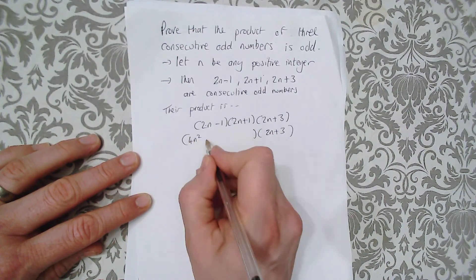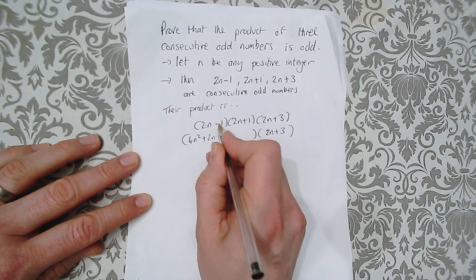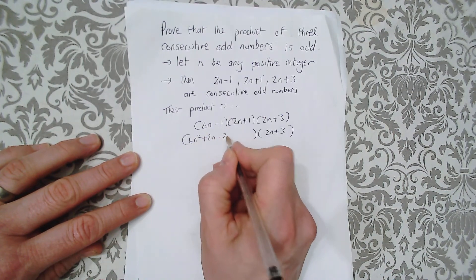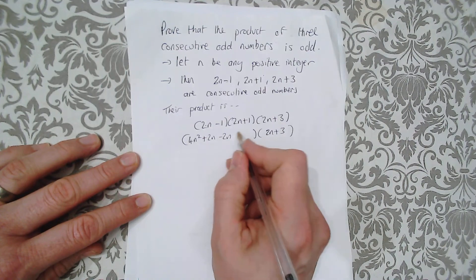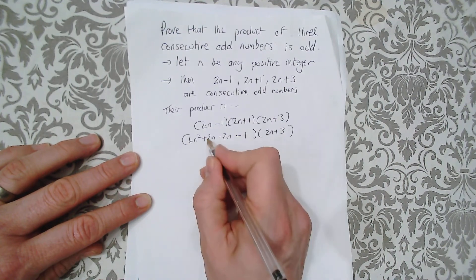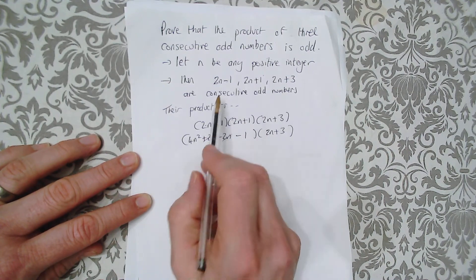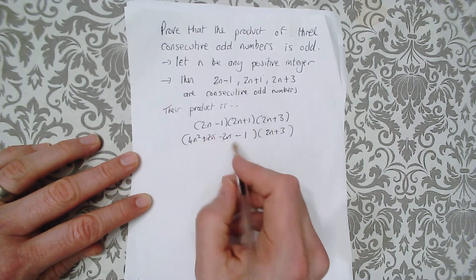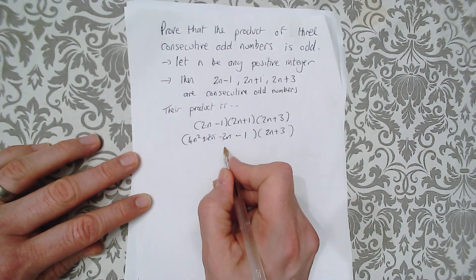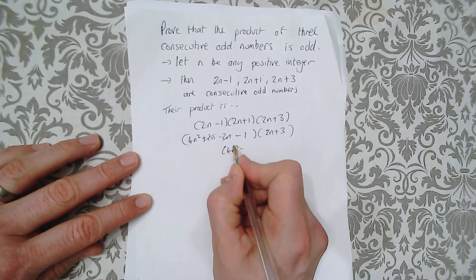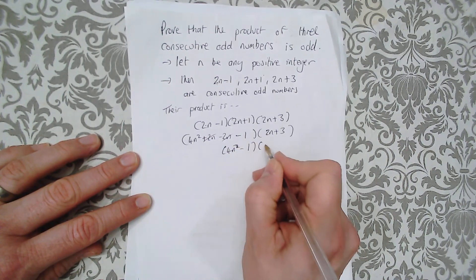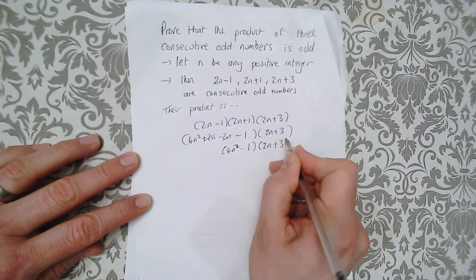2n times 2n times 2n, 4n squared. 2n times 1, so we've got plus 2n, minus 2n, negative 1 times 2n, and then negative 1. Notice nicely they cancel out. That's the advantage of doing the 2n minus 1, 2n plus 1. So I get 4n squared minus 1, 2n plus 3.